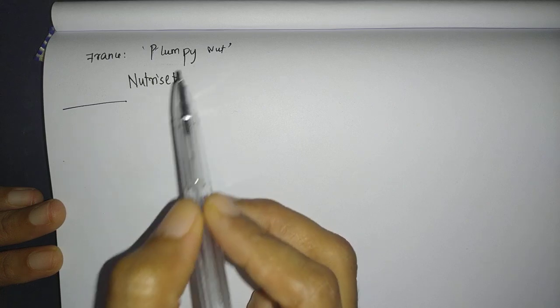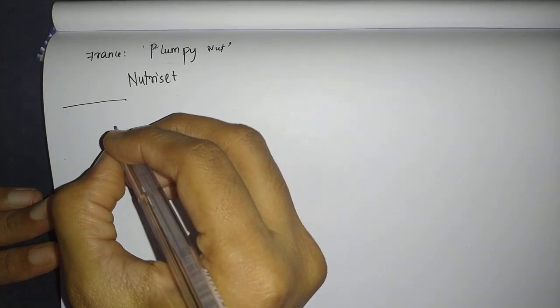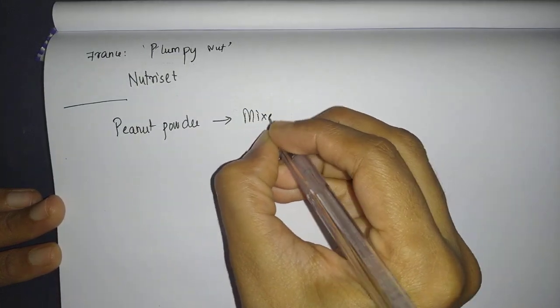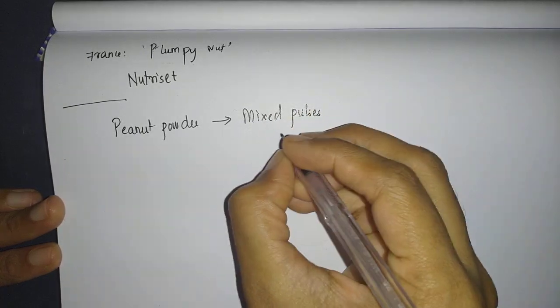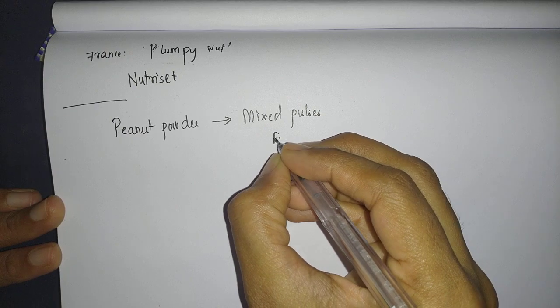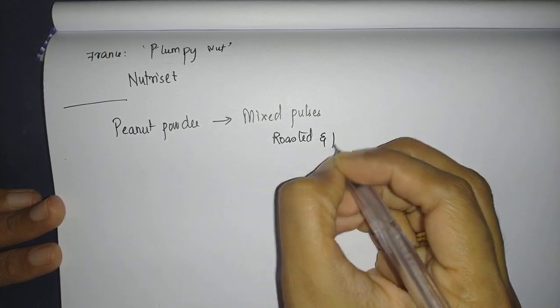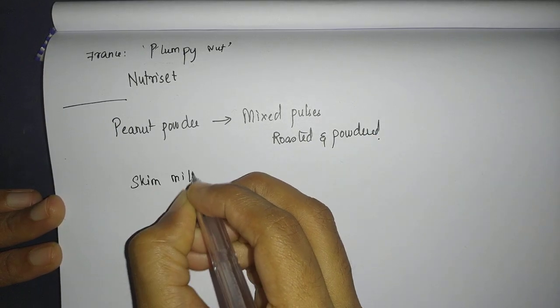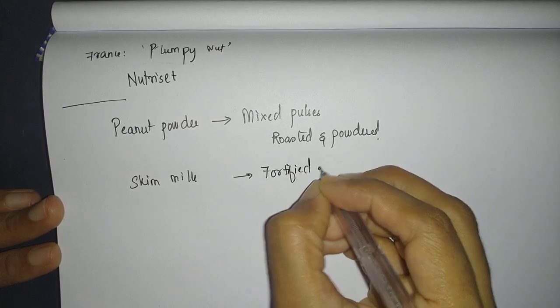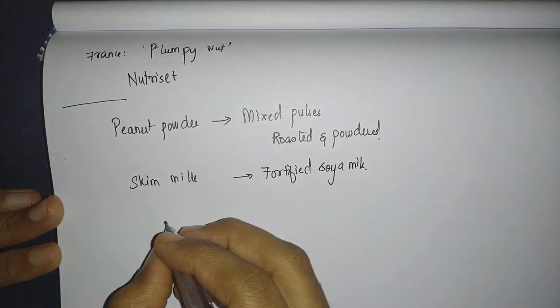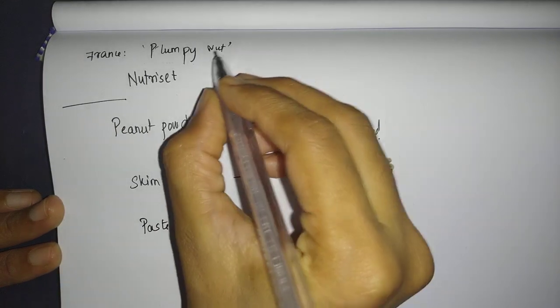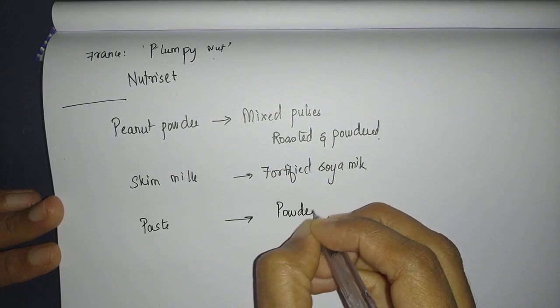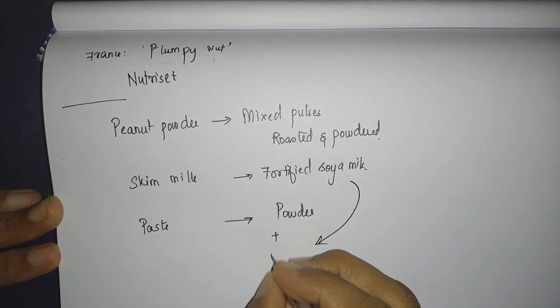One example is where they substituted peanut powder for mixed pulses—not raw, of course, it's roasted and powdered to be exact—and instead of skimmed milk powder, they used fortified soya milk. Instead of being in a paste form, this is a powder mixed with fortified soya milk just before giving.